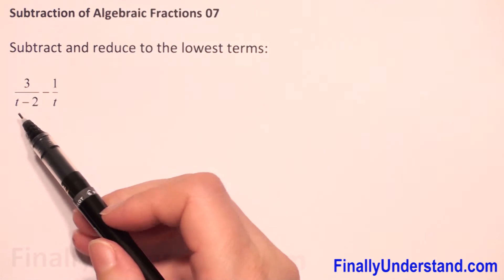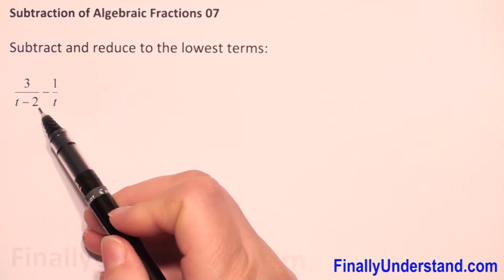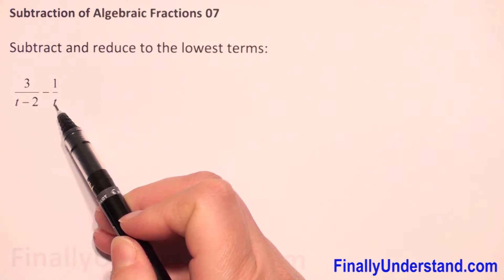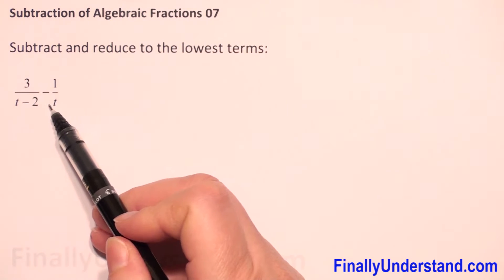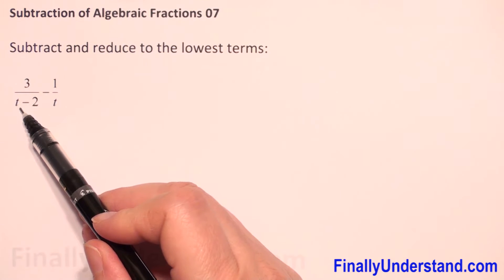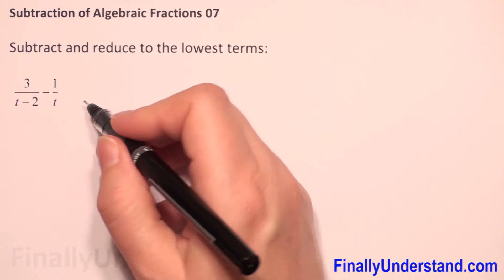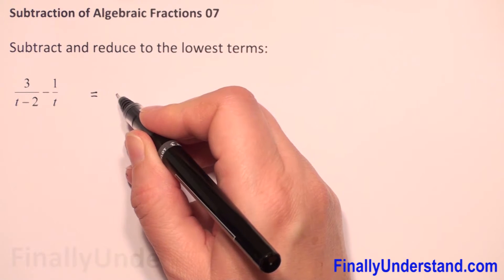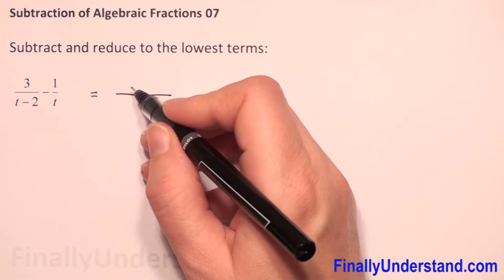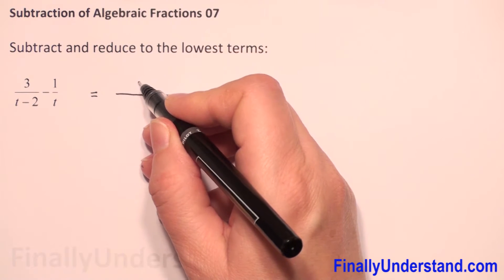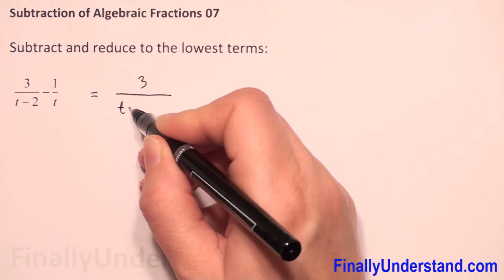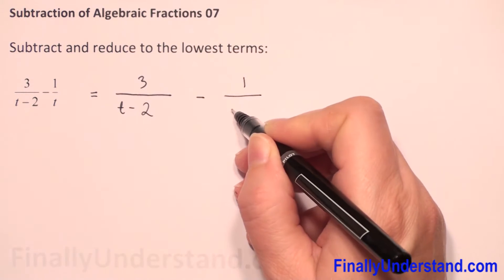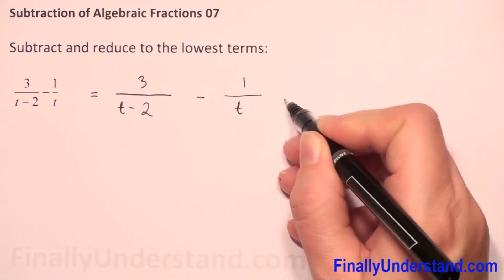So we have here t minus 2 and t as our denominators — we need to find the least common denominator. We just multiply t minus 2 times t. Let me copy the algebraic fraction first: we have minus 1 over t.